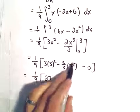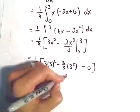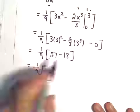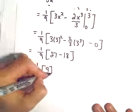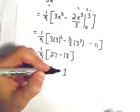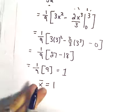3^3 over 3, that's 3^2, which would be 9, times 2 would be 18. Well, 27 minus 18 is just going to give us 9. And then if we do 1/9 times 9, we'll get 1. So x-bar is going to be equal to the value of 1.